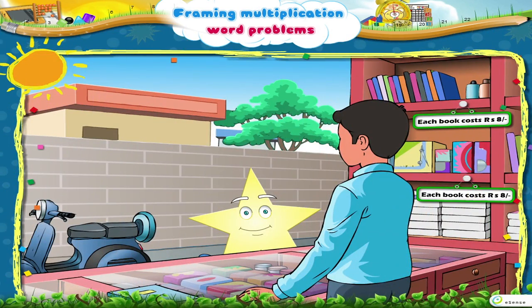Here we are at the bookstore. Look at all the neatly arranged books. What's that label on each book, Starry? It's a price tag. It says each book costs rupees 8.